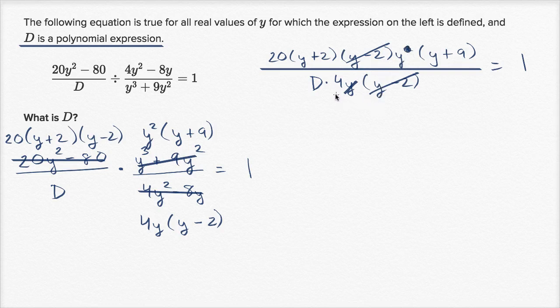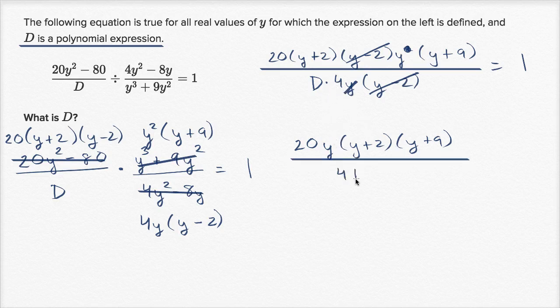And so what we'd be left with, what we'd be left with in the numerator is 20 times this y times y plus 2 times y plus 9, over 4d, 4d is equal to 1.